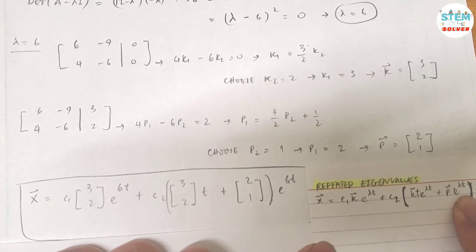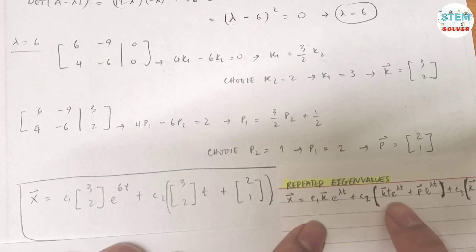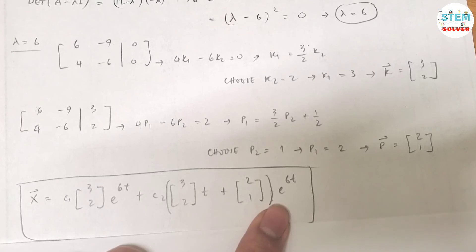Times e to the lambda t, which is e to the 6t because, as you can see, they have this and this multiplied by e to the lambda t so I just pulled it out of the parenthesis.